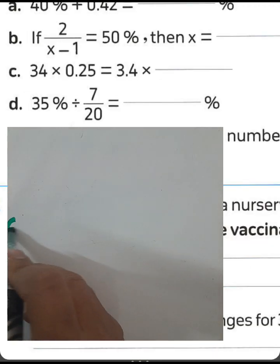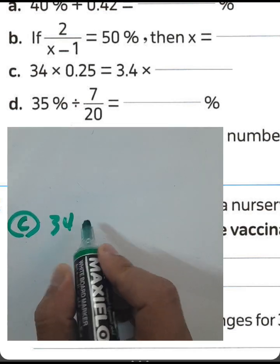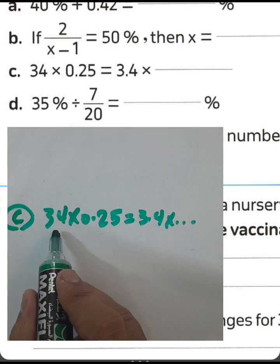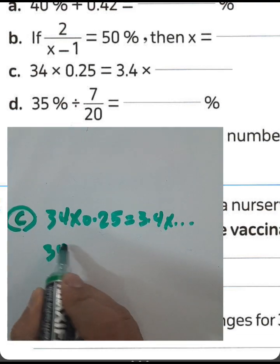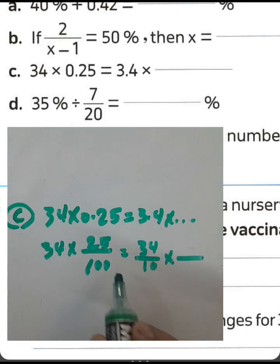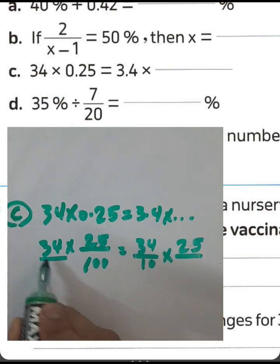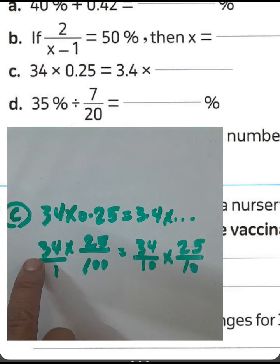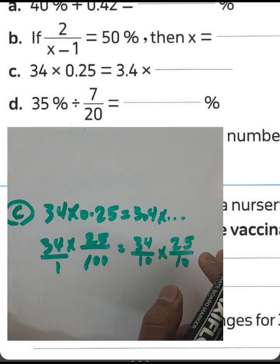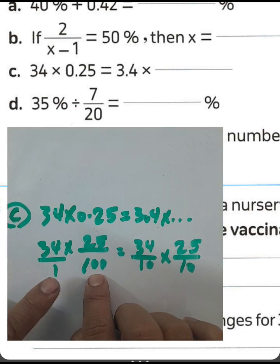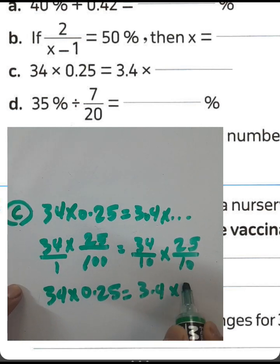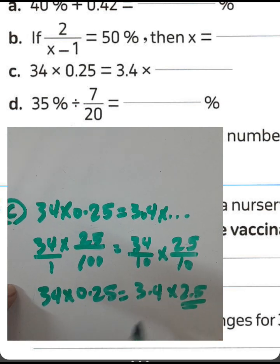Letter C: 3.4 times 0.25 equals 3.4 times 25/100. We can write 3.4 as 34/10. So 34/10 times 25/100. The decimal point in the result must be after two places. The equivalent expression is 3.4 times 2.5 — write 2.5 in the space.